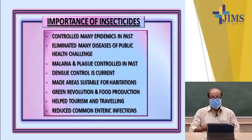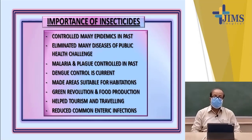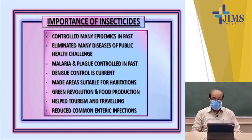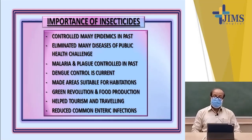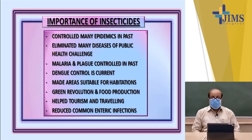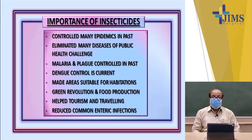The importance of insecticides is that they controlled many epidemics in the past, especially plague and malaria epidemics. They eliminated many public health diseases — malaria, plague, and typhus fever were controlled simply by spraying insecticides. At present, dengue is a challenge and is also being tackled with the help of spraying chemical insecticides, mainly deltamethrin.